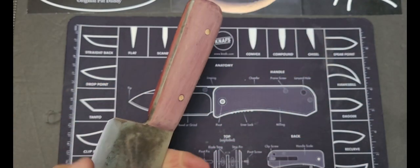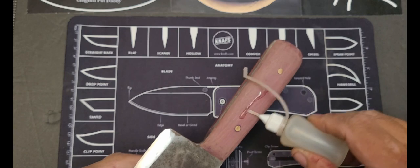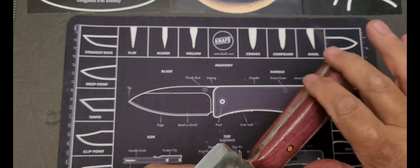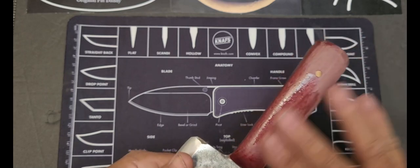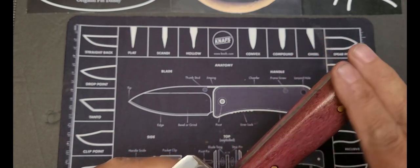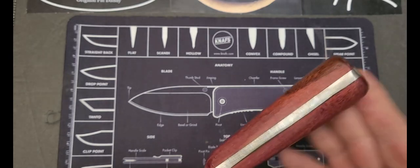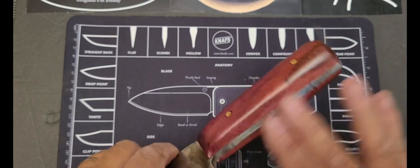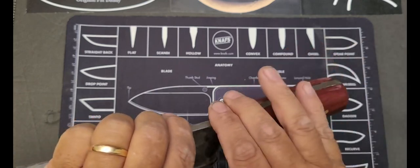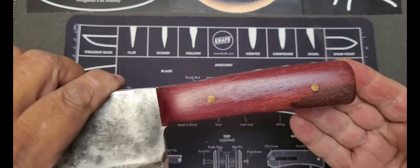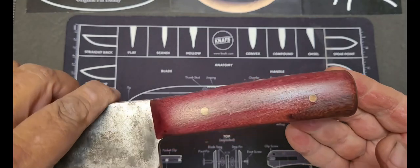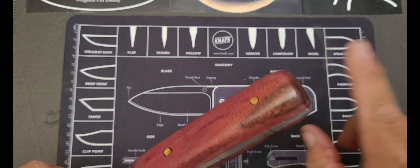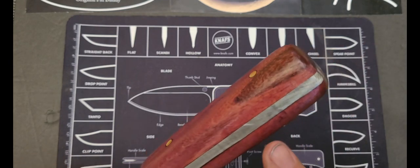I'm going to sand these handles one more sanding. This was a very rough 80 grit paper that I used to shape these on the belt. I can hear it, I can hear the roughness when I rubbed my hand across it there. But that's a pretty good idea of what purple heart looks like.